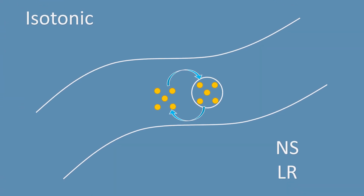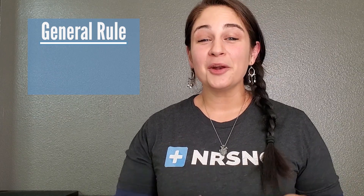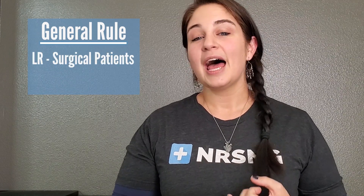The big question is: what's the difference between NS and LR, and how do you know which one to give? LR has electrolytes that NS does not — things like potassium, magnesium, and lactate. We give LR when a patient has lost whole blood, such as trauma, surgery, or a GI bleed, because it replaces electrolytes too. If a patient is just dehydrated from vomiting, we give normal saline — we just need to replace fluids. As a general rule, LR is used in surgical and trauma patients, and NS is used in medical patients.